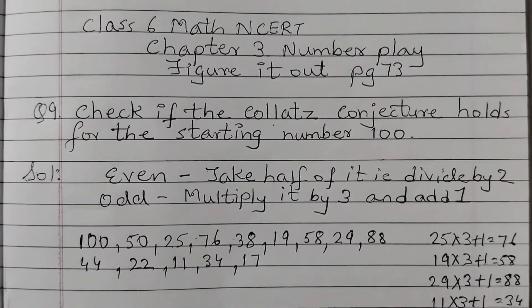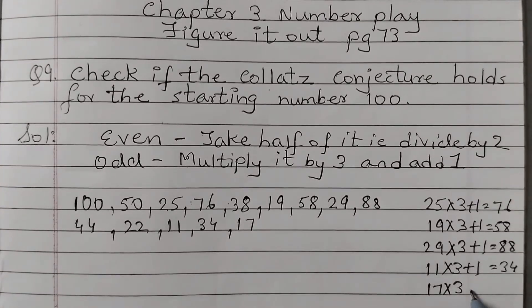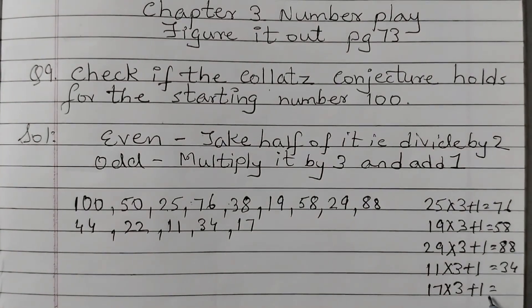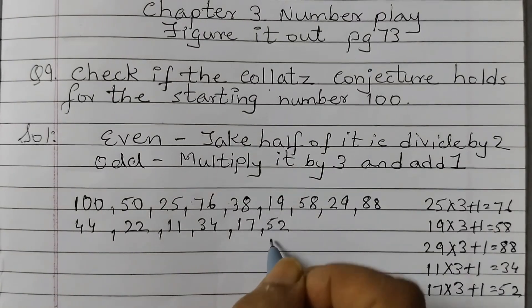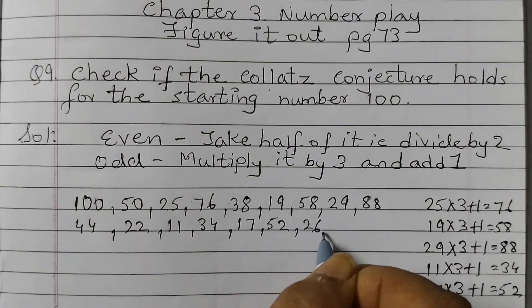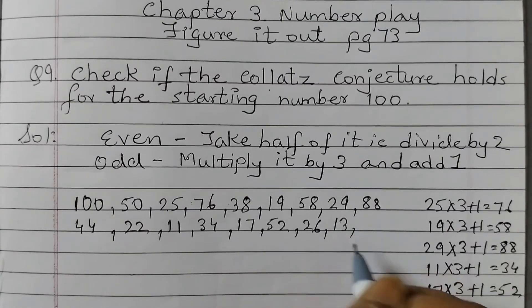34 even number divide by 2, 17. 17 odd number. So 17 into 3 plus 1, so 51 plus 1, 52. Half of 52, 26. Even number half of 26, 13.